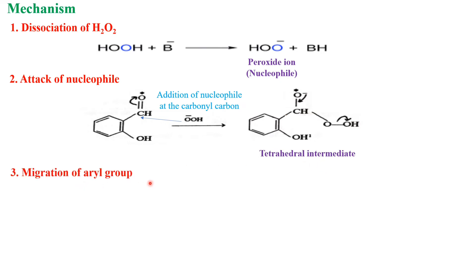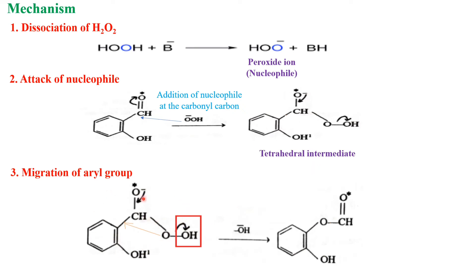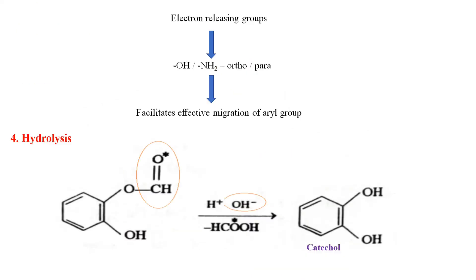The third step is migration of the aryl group. From the tetrahedral intermediate, the aryl group migrates. If an electron-releasing group — for example, a hydroxy or amino group — is present in the ortho or para position, it facilitates the migration of the aryl group. The aryl group migrates from the carbon to the oxygen. The aryl ring becomes connected to the oxygen, and the hydroxyl ion is removed, giving an aryl formate.